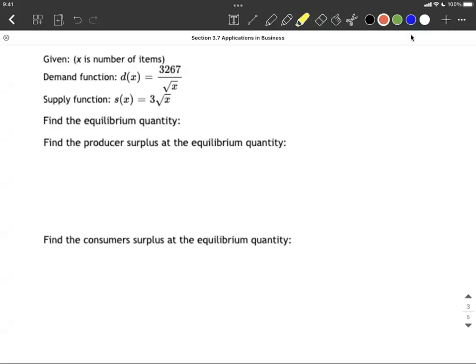Okay, we're given a demand function and a supply function. Our goal is to find the equilibrium quantity. We'll actually do one better and find the entire equilibrium point. We're going to find the producer surplus and the consumer surplus.